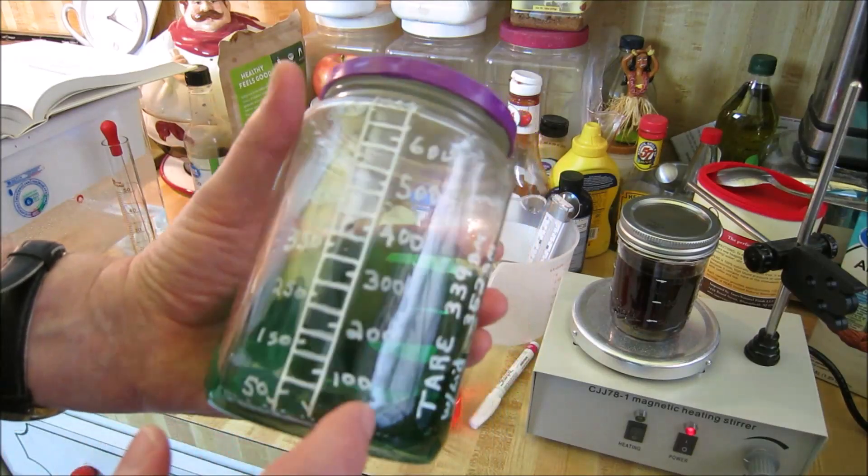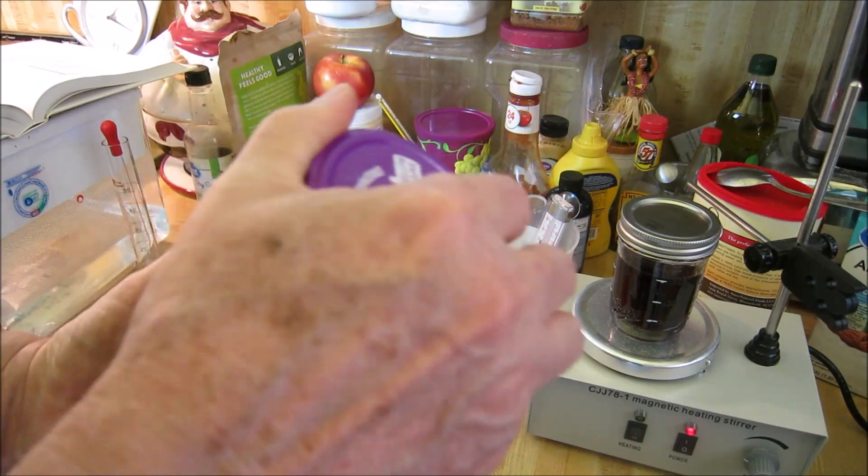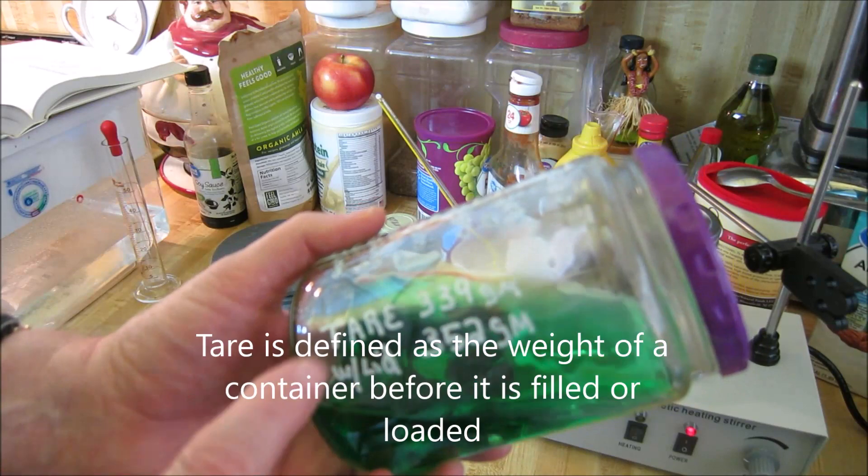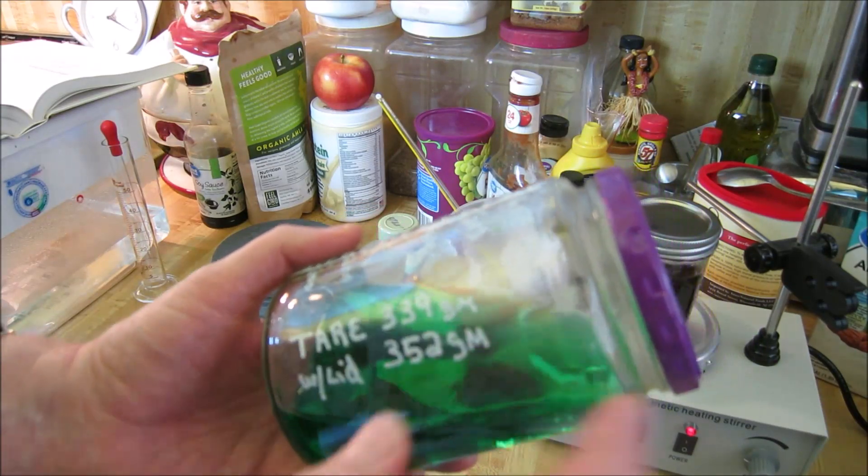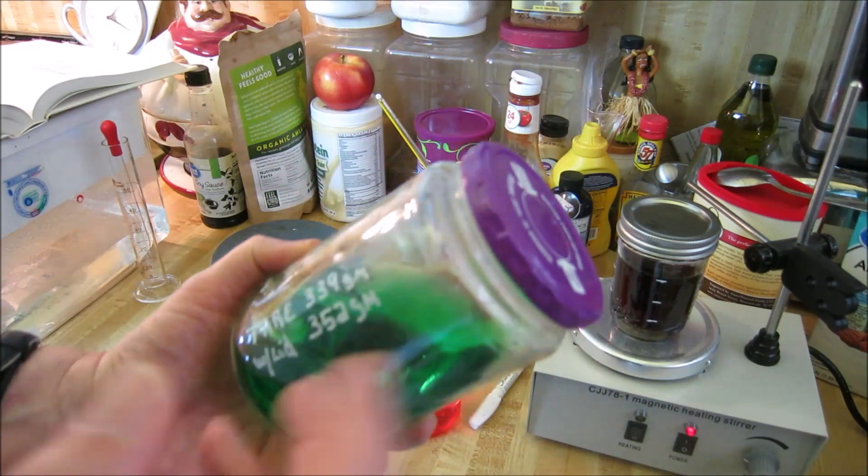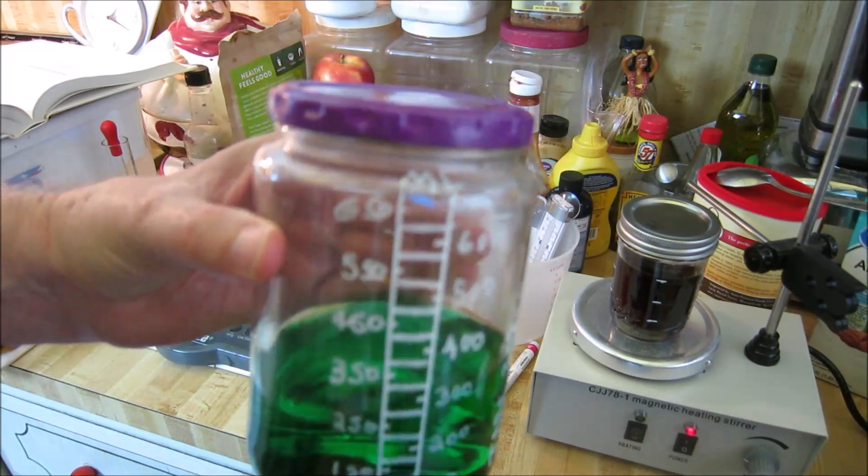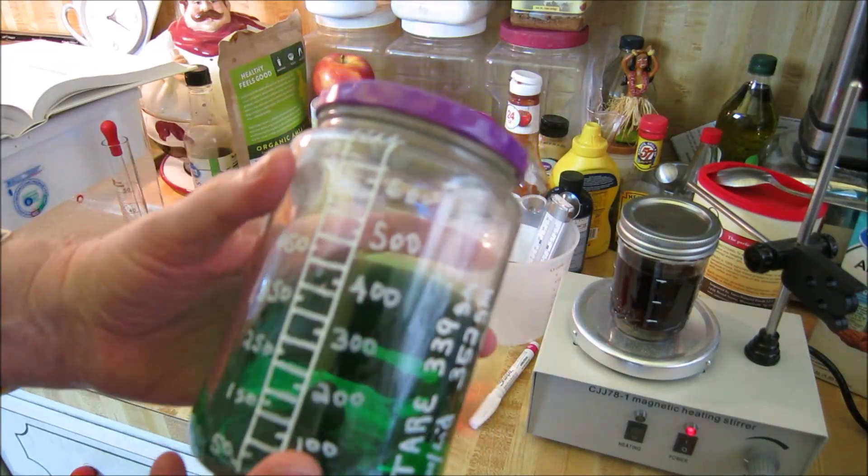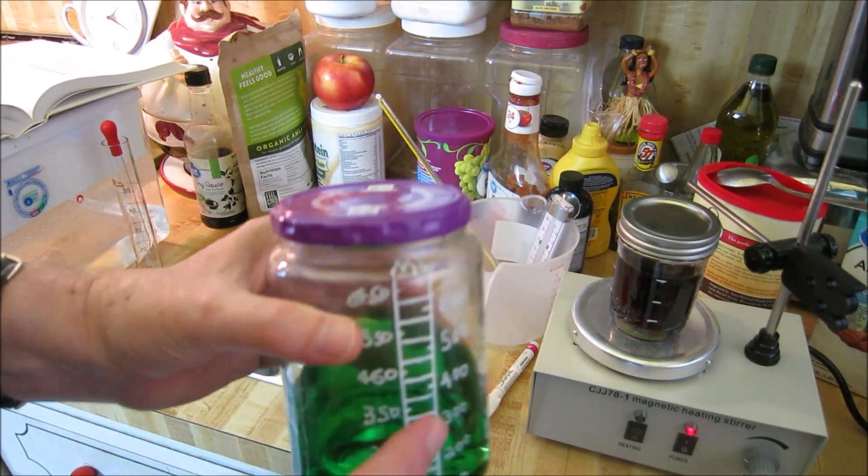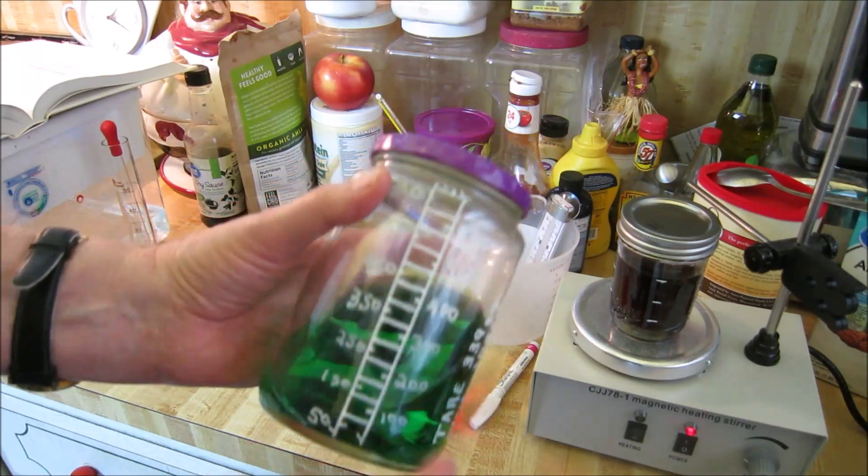So we just made 50 ml markings on this. And whenever you do make a container for measuring, you should always get the tare weight of it. This tare is 339 grams without lid and with the lid, the tare is 352 grams. So you can know what your volume is at any time by measuring it. And that's how we did it. We put this on the scale and added 50 grams at a time.